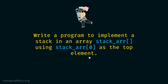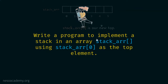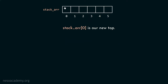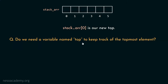We want to implement a stack in array stack ARR where stack ARR zero must be the topmost element. We want the first element of the array to always be the topmost element of the stack. This is an entirely new program. It seems easy, but it is not. Here is our stack ARR in its initial empty state. We want stack ARR zero to be our new top. Do we even need a variable named top to keep track of the topmost element?